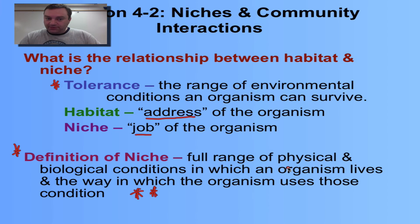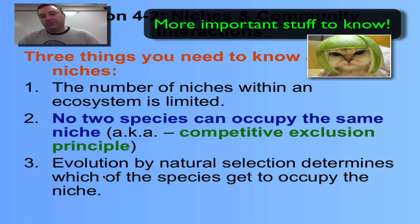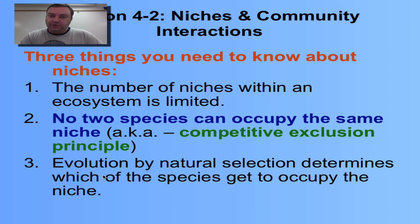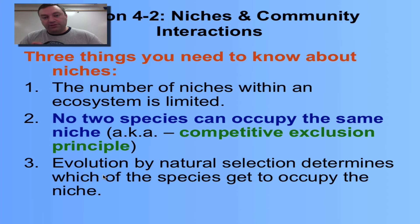This is a very important slide — make sure you pay attention. Three things to know about niches: number one, niches within an ecosystem are limited. There's not enough space or resources to go around, so there's going to be competition. Remember Thomas Malthus — there's not enough resources for everyone. This competition greatly shaped Charles Darwin's idea of survival of the fittest, or natural selection.